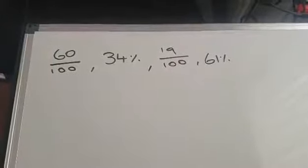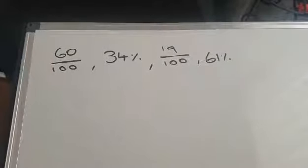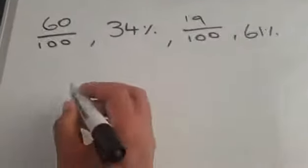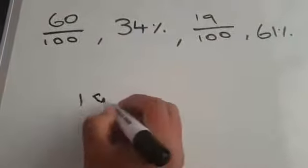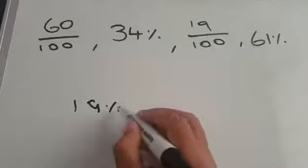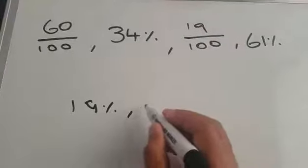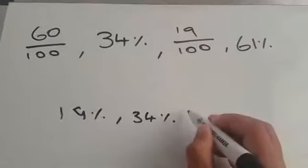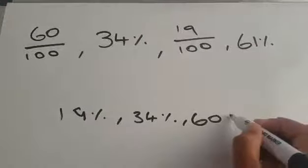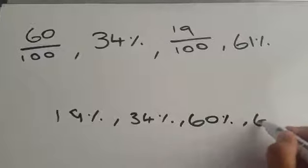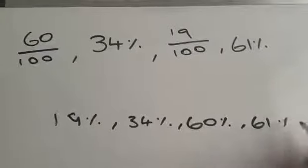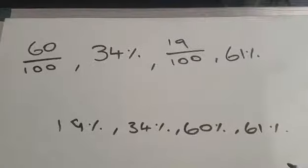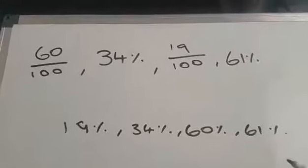So if we go from lowest to highest, really what you would have is 19%, 34%, 60%, and 61%. Now that's correct initially, but that's not how they've asked you to put it in.